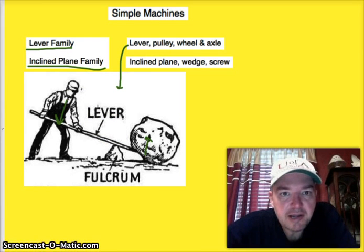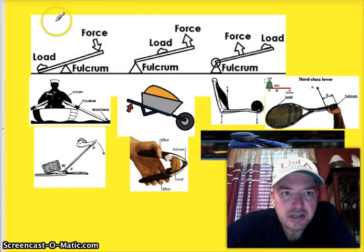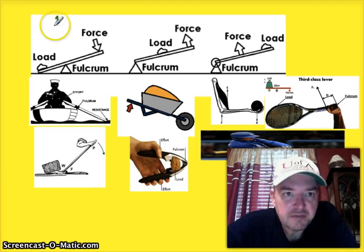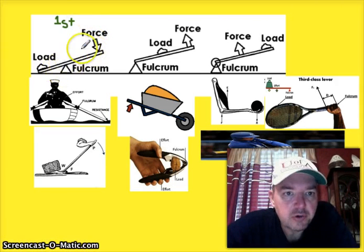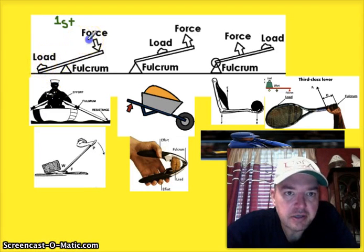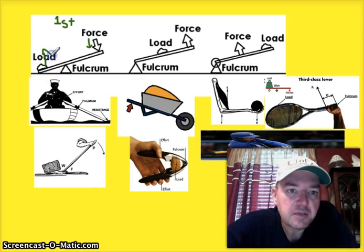There are three classes of levers. The first class is the most commonly used kind — just like before. You have the force going down on one end, a fulcrum somewhere in the middle, and whatever you're lifting on the other end. You go down on one side and the load is lifted up on the other side.